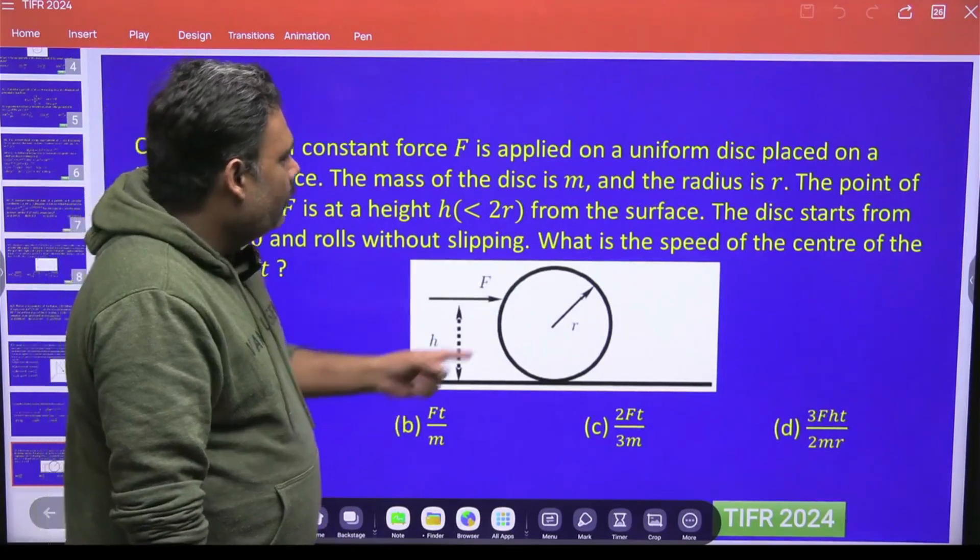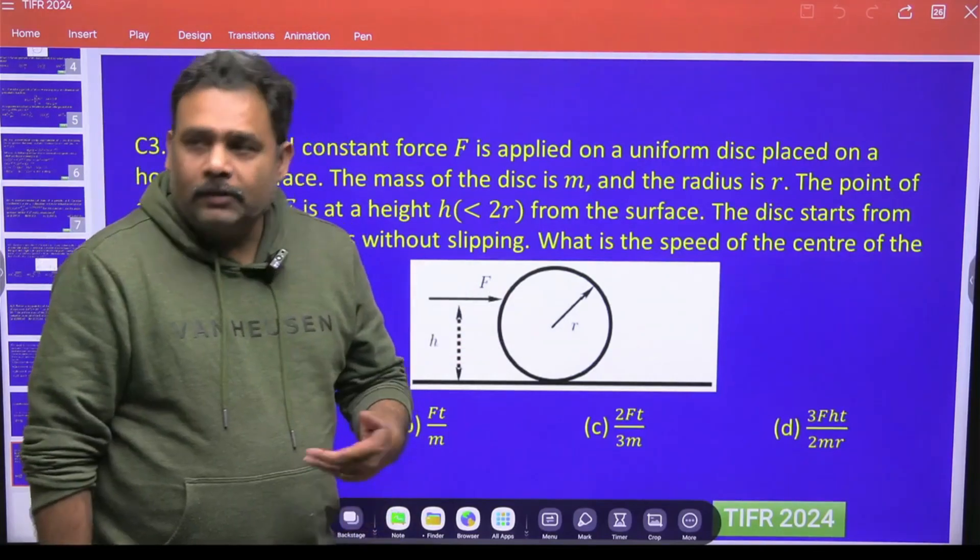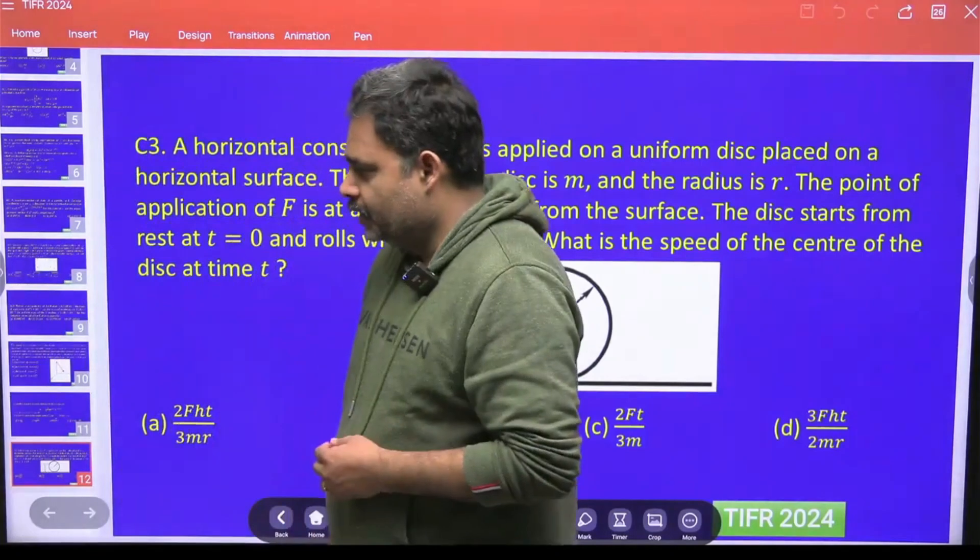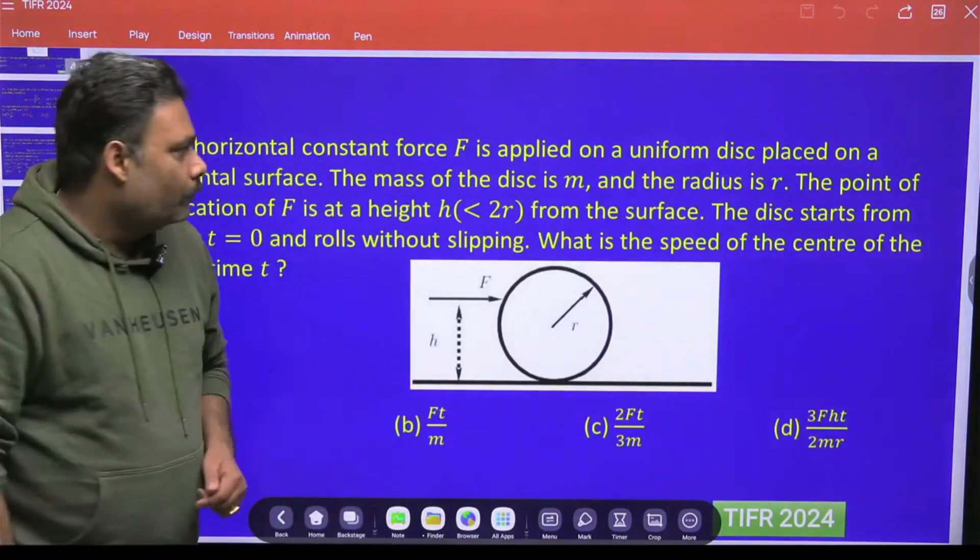It is also given that the disk at t equals zero is rolling without slipping. This is one of the very interesting problems and we have to go for concept by concept. So let's try to solve this one.